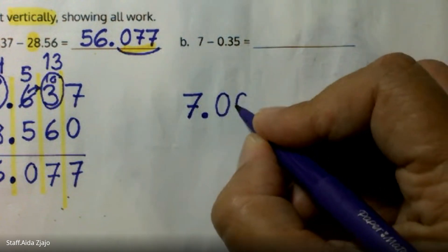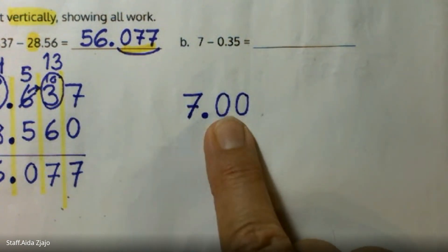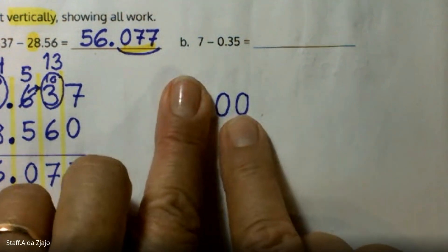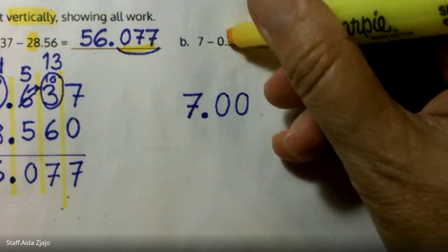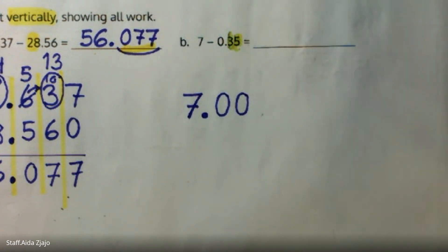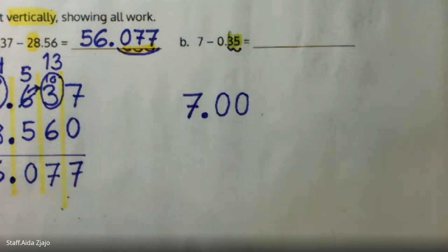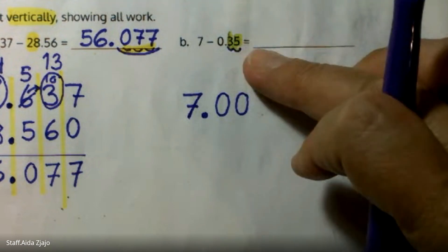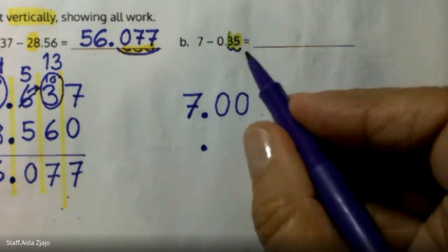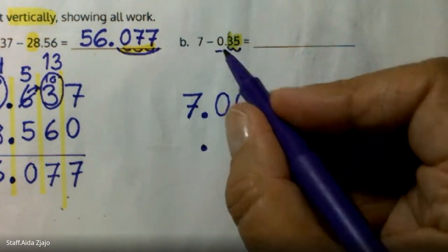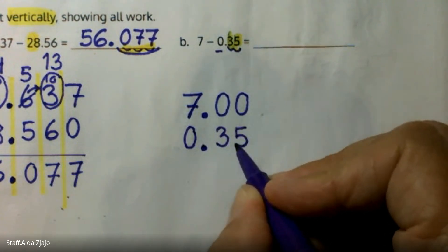I'm adding zero dimes and zero pennies — when I have 7 wholes I don't have any part of a decimal: zero tenths, zero hundredths. I only added two zeros because here I only have two place values, so I need only hundredths. If I had thousandths in the second number, I would add three zeros. Now I'm going to put the next decimal point and then place the second number: zero wholes and 35 hundredths, or 35 cents.